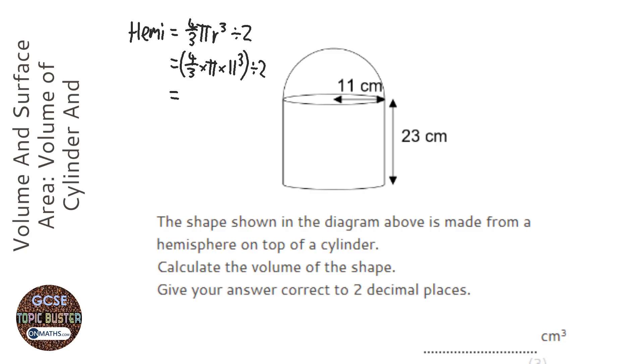So we're going to work out the volume of the cylinder. So it's the area of the circle at the top of it, which is pi r squared, and then we're going to times it by the length or height probably in this one. So pi times the radius, which is 11 squared, times 23.